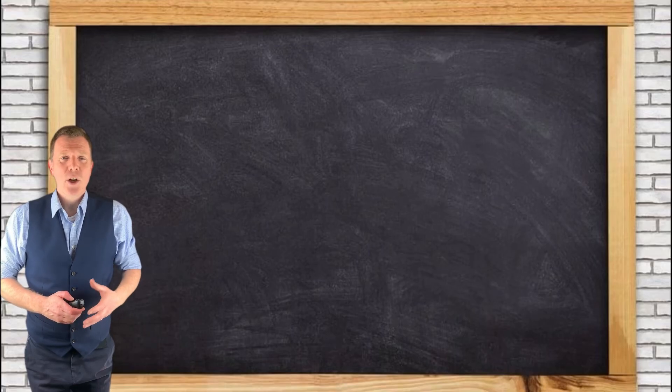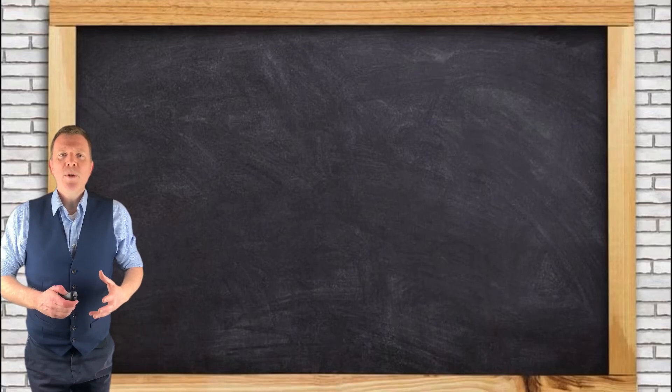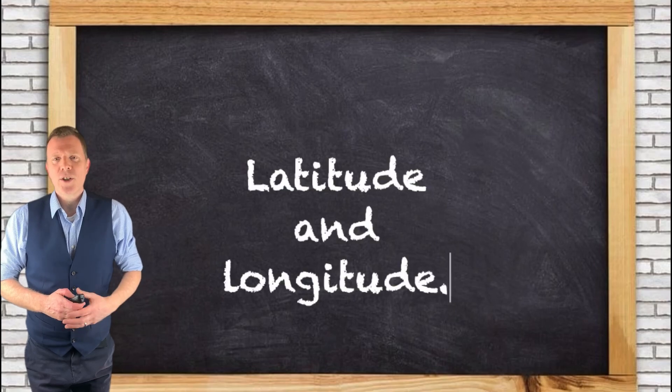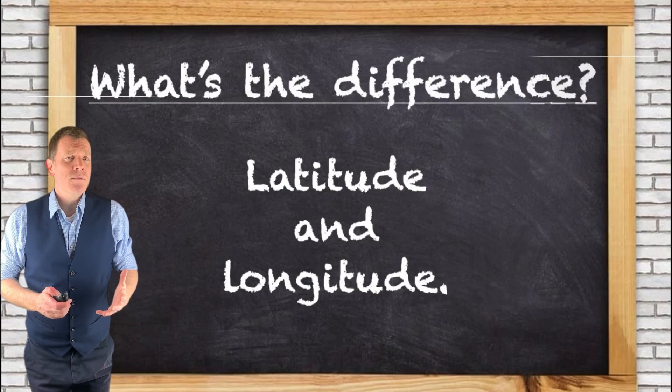In order to navigate and locate places around the globe, people use lines of latitude and longitude. But what's the difference?